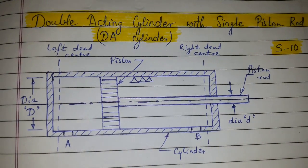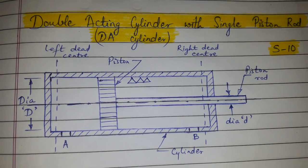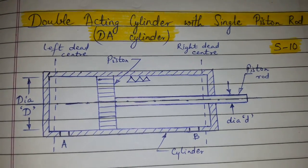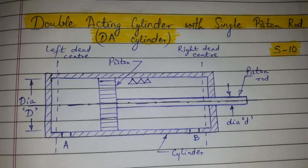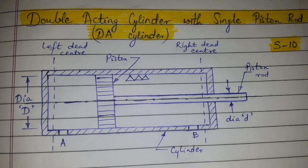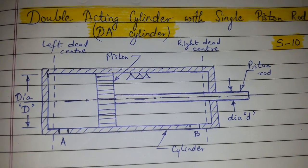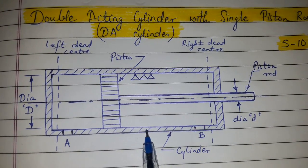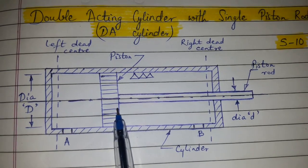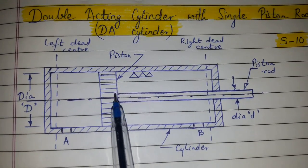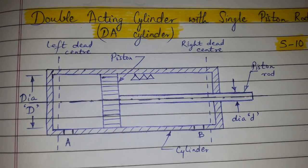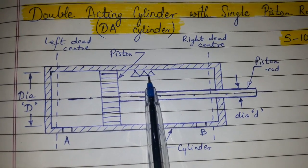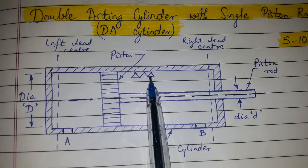Today's topic of discussion is the double acting cylinder with single piston rod, also called a DA cylinder. We'll discuss this in two phases: construction and working. It consists of a cylinder in which the piston with a single piston rod can reciprocate, similar to a single acting cylinder. The cylinder bore is a highly finished surface with closed tolerances.